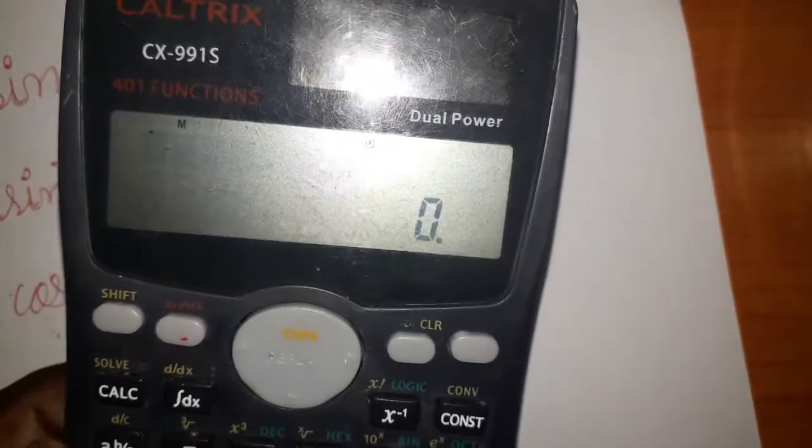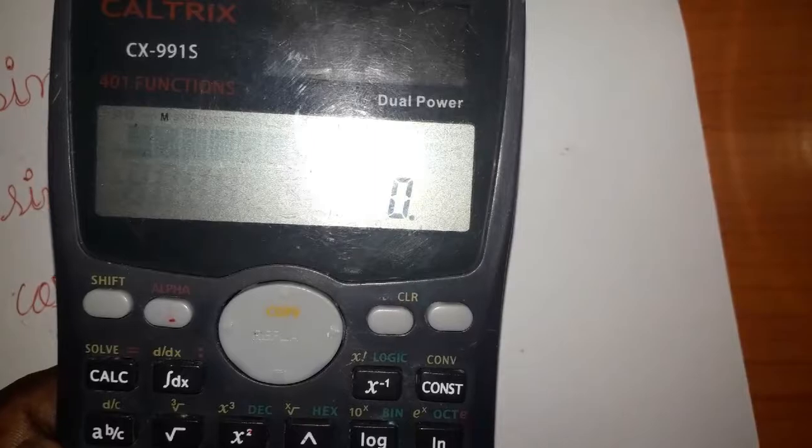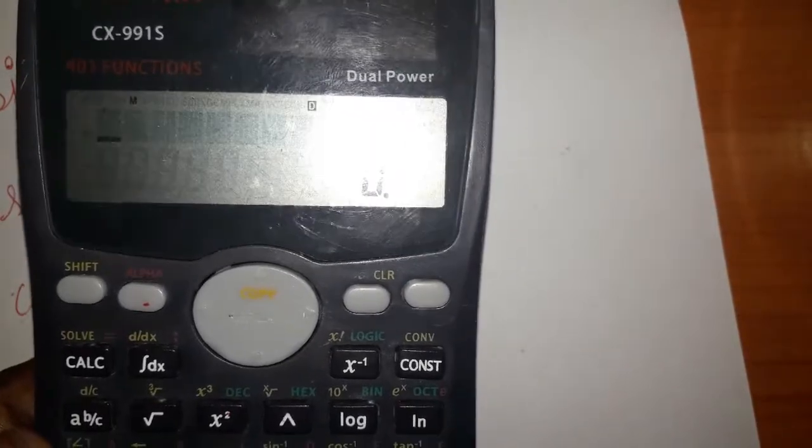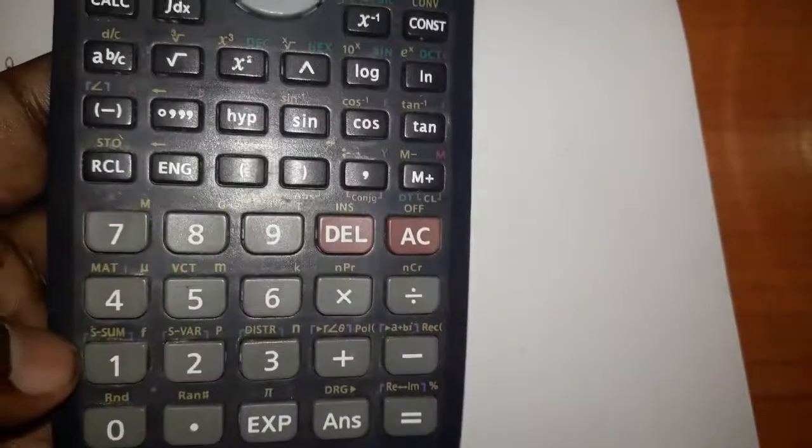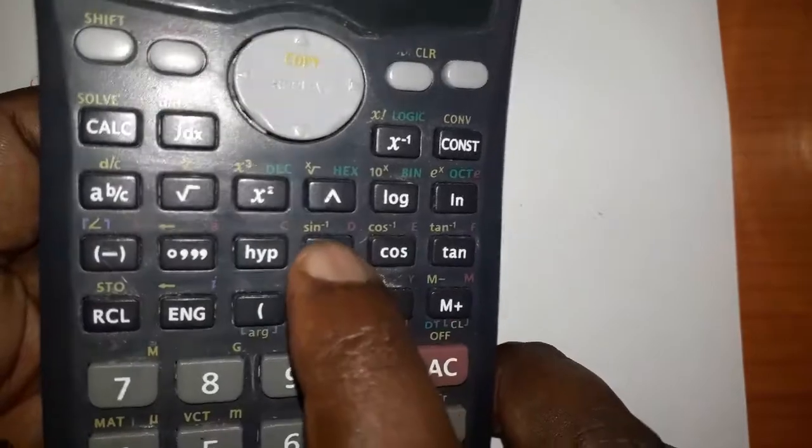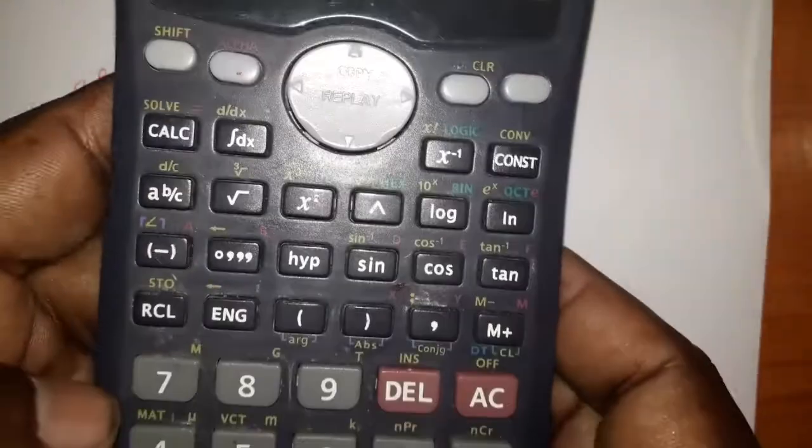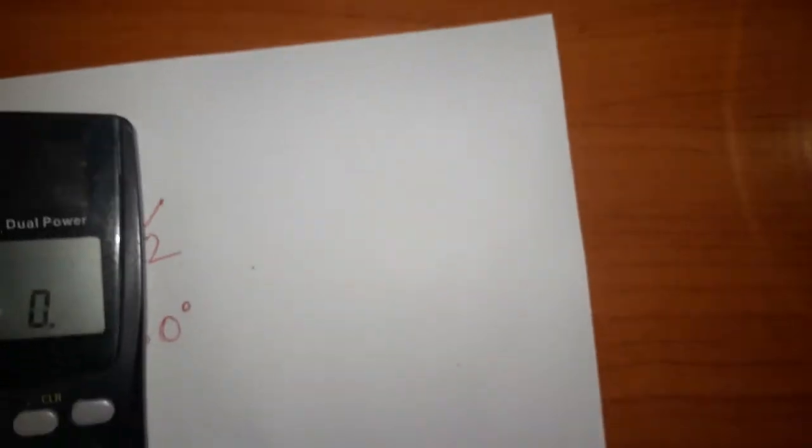Hello students, today in this video we are going to learn how we can get degree, minute, second in calculator. See here we have sin. We'll take an example: sin 30